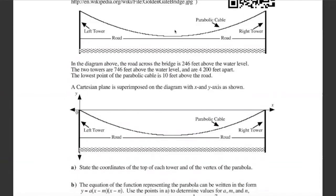We can make a diagram: the distance from the lowest point of the cable to the road is 10 feet, the full width across is 4200 feet, the height from the water to the top of a tower is 746 feet, and from the water to the road is 246 feet.